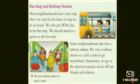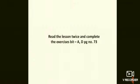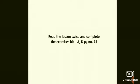Some neighbourhoods also have a railway station. We visit the railway station to catch the train to go somewhere. Sometimes we go to the station to receive or see off our friends and relatives — to send them off or to receive them when they are coming. Now read the lesson twice and complete the activities in your page number 73.